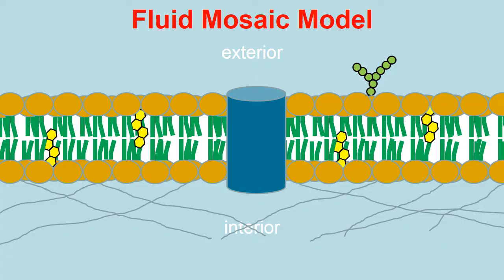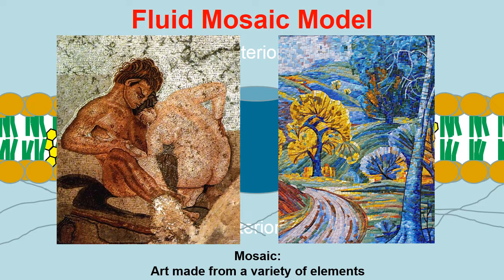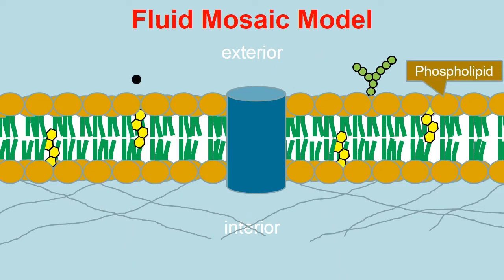The plasma membrane is often referred to as a fluid mosaic model. 'Mosaic' brings to mind artwork made from a wide variety of elements — different sizes, colors, and shapes arranged together. The plasma membrane is similarly a mosaic because it's made from a wide variety of components. The phospholipids, with their hydrophilic heads and hydrophobic tails, allow small non-polar or uncharged molecules to pass — carbon dioxide and oxygen are two gases that can freely pass through the phospholipid bilayer.